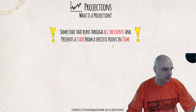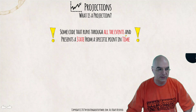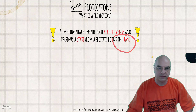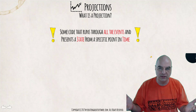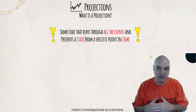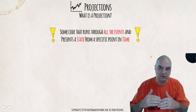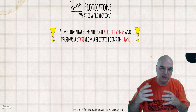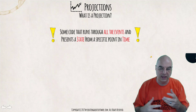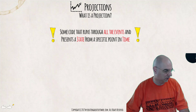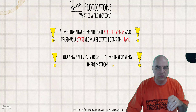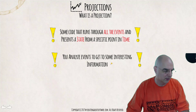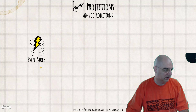So what is a projection? It's simply some code that runs through all the domain events and presents a state from a specific point in time, which is critical. That is what I meant by time travel. As you go through each domain event — say you're running the system for two years — you start from the beginning of time and then move forward, taking a piece of information that you're interested in and analyzing it. Once you go through the domain events, you look for interesting information that you, your customers, or your business units are interested in.